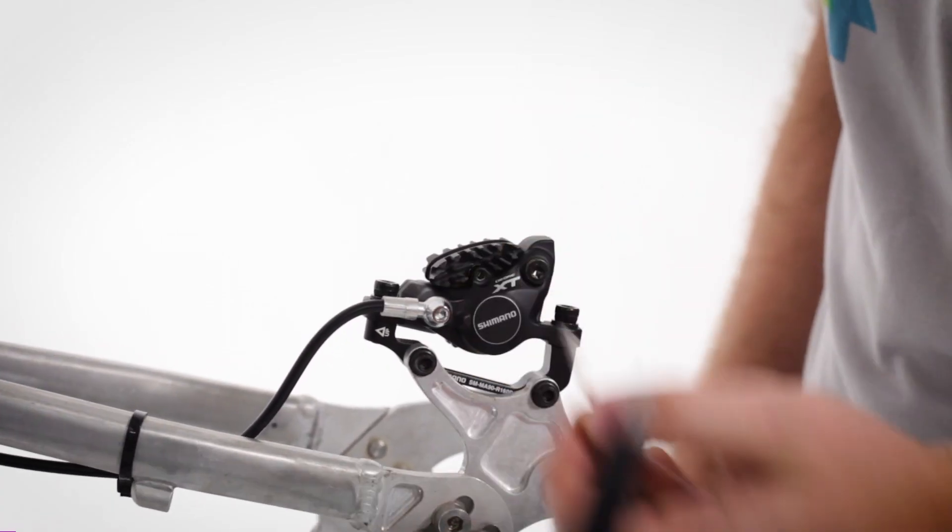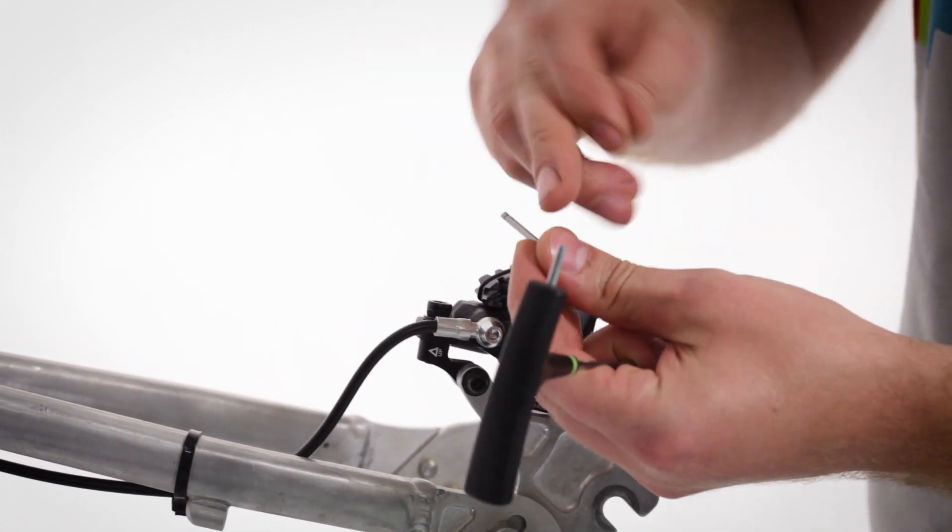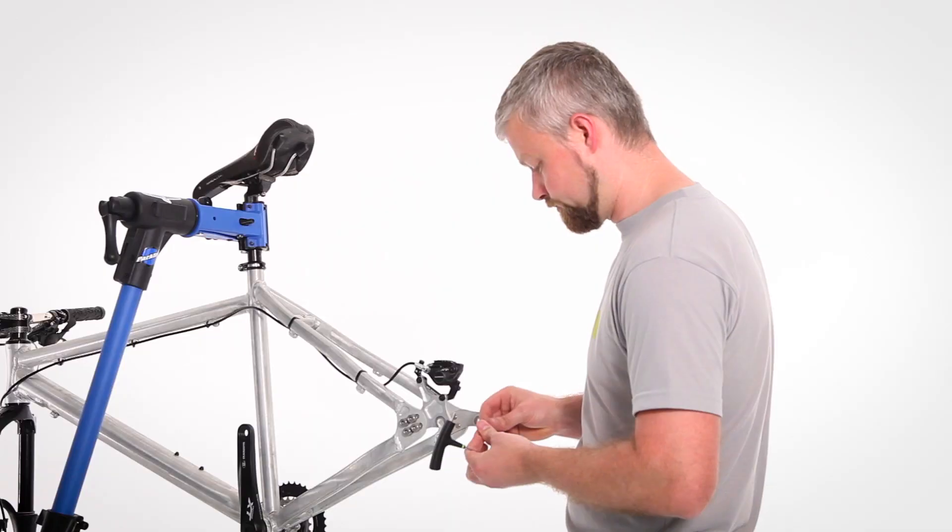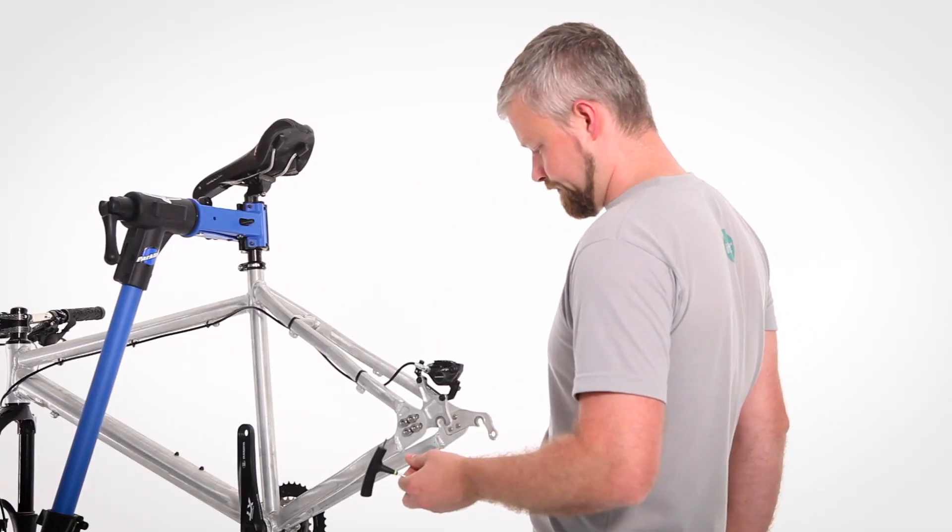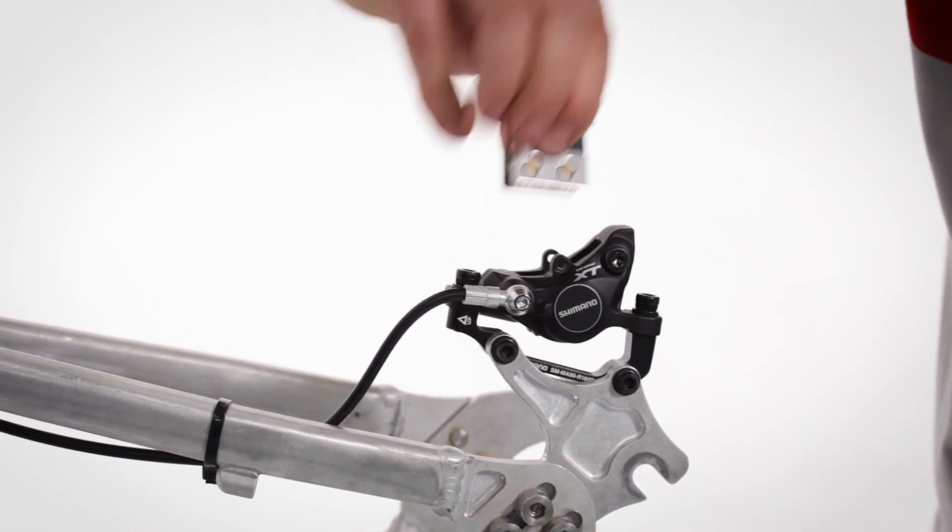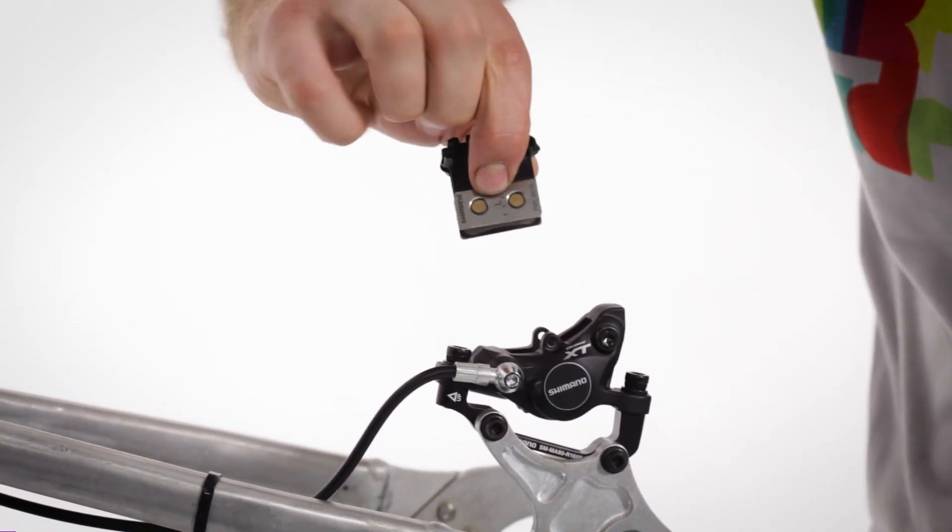If you've got SLX or below, this will be a long split pin that you just bend straight and pull out. Pop them somewhere safe where you won't get any oil on them.